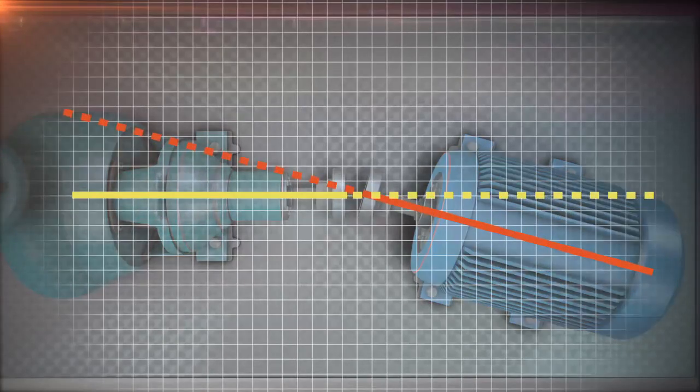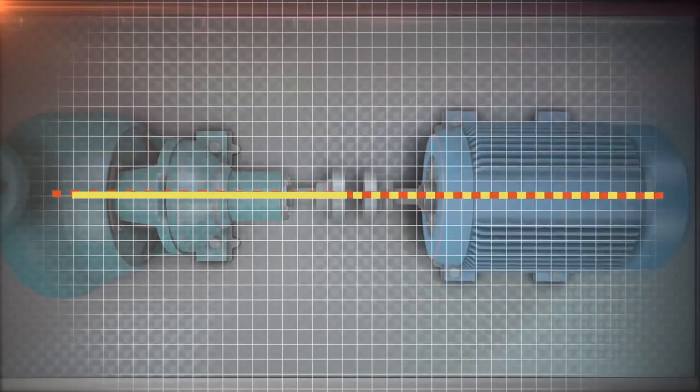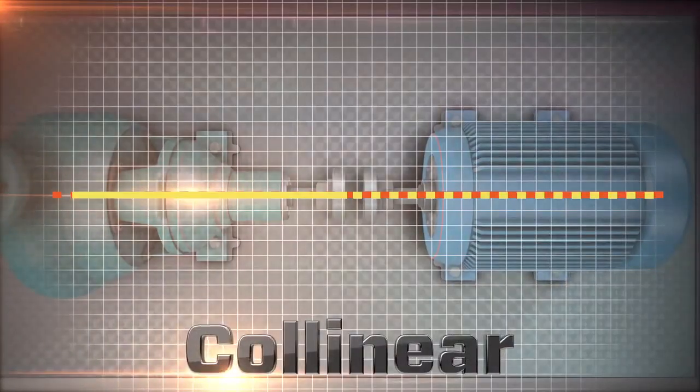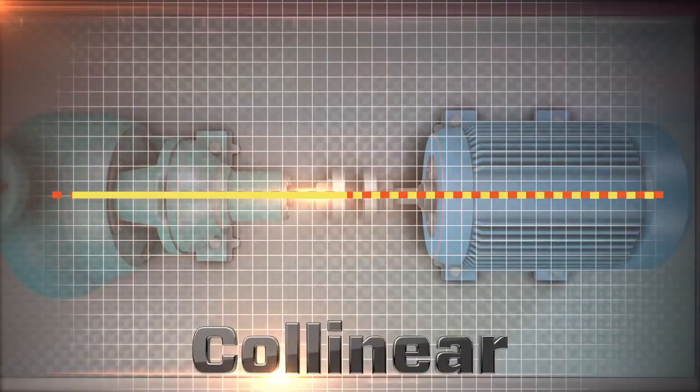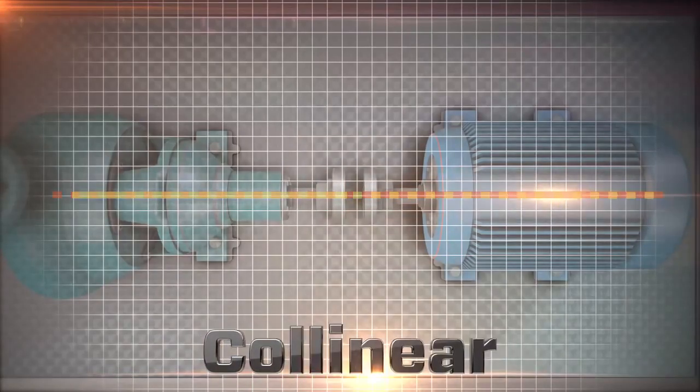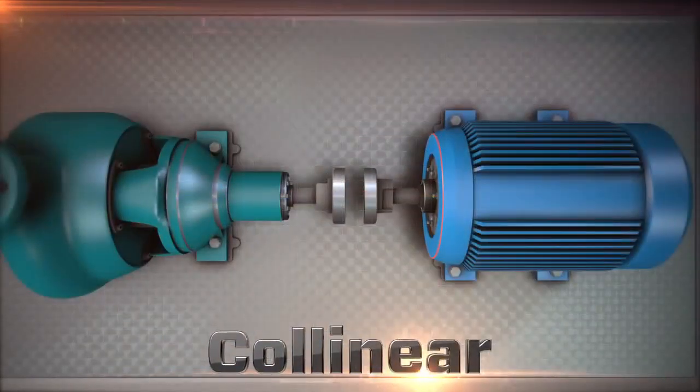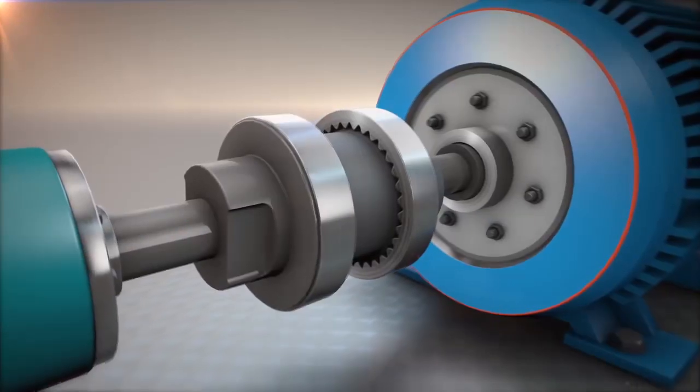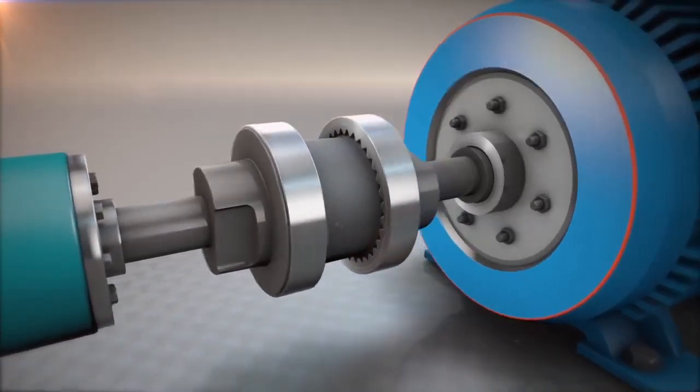Forget for a second that we are aligning two machine shafts. Instead, imagine two simple lines that represent the shafts. The goal of an alignment technician is to adjust these two lines to be collinear. Collinear means that two lines are positioned as if they were one single line.